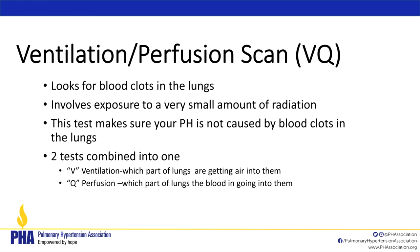The VQ scan — ventilation perfusion scan — looks for blood clots in the lungs and involves exposure to a very small amount of radiation. It ensures your PH is not caused by blood clots, which would be group 4, CTEPH. It looks for very small clots that a CT scan might not pick up. The V part tells us which parts of the lungs are getting air, and the Q — perfusion — tells us which parts of the lungs the blood is reaching.